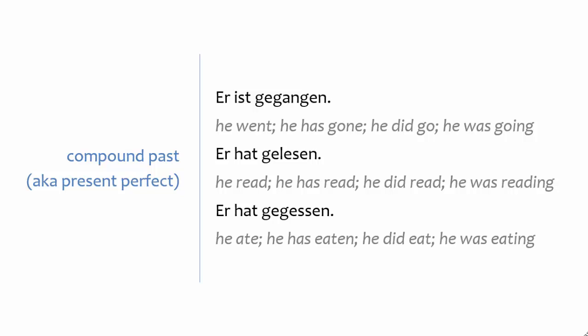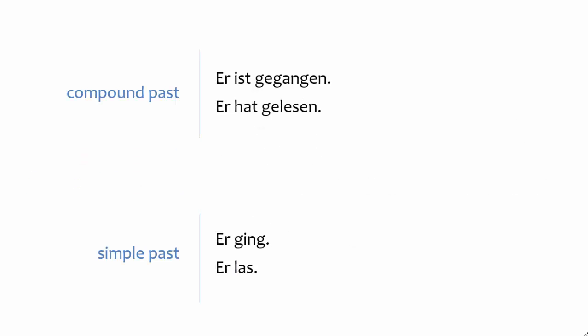To talk about things in the past, German most often uses the compound past, also known as the present perfect. Examples of the compound past are on your screen. If you need a refresher on how to form the compound past or on the differences between English and German past tense usage, those videos are in the playlist. The compound past is called compound because it consists of two parts: a helping verb and a past participle.